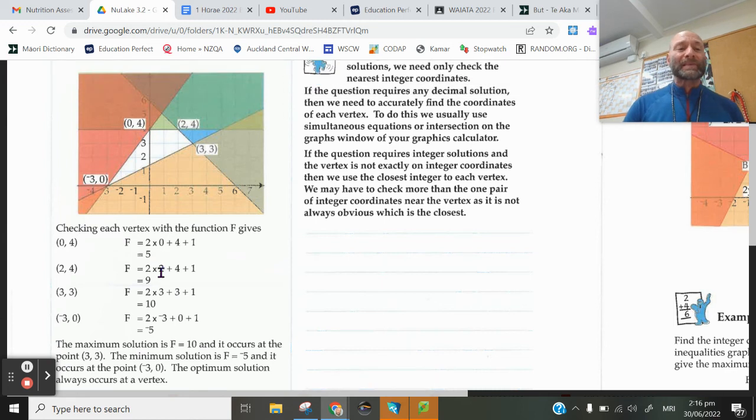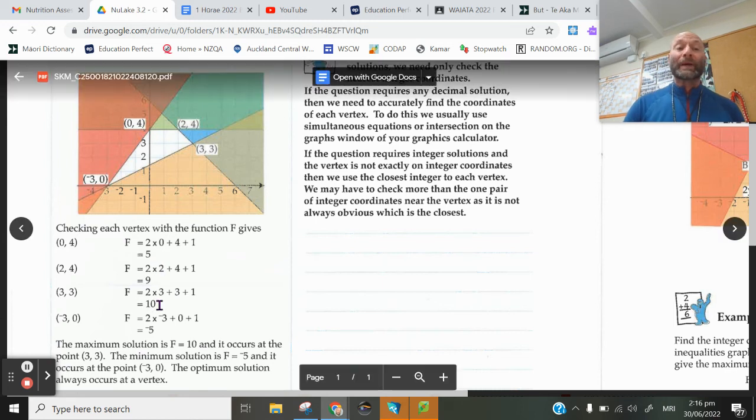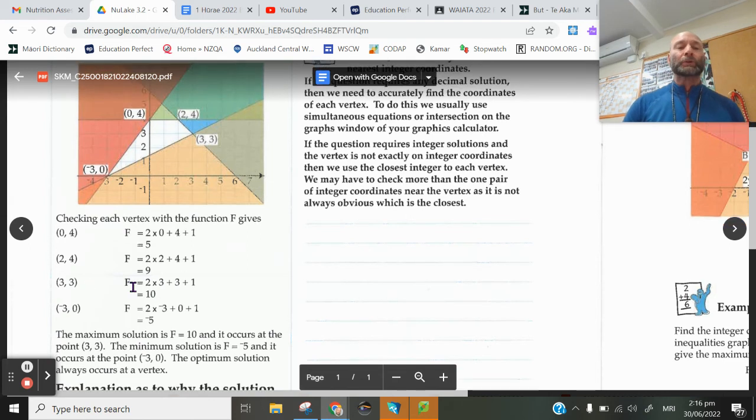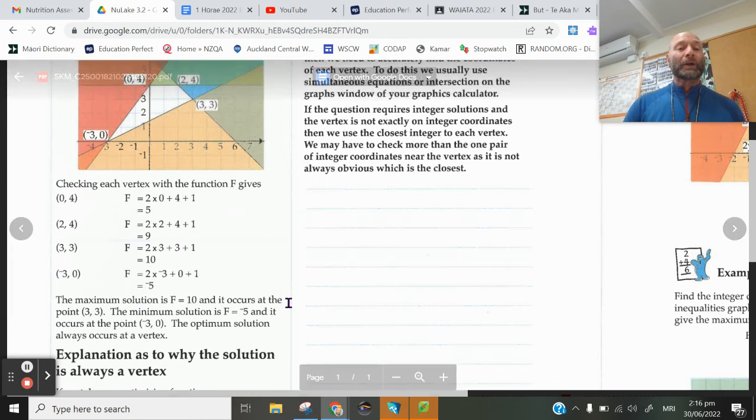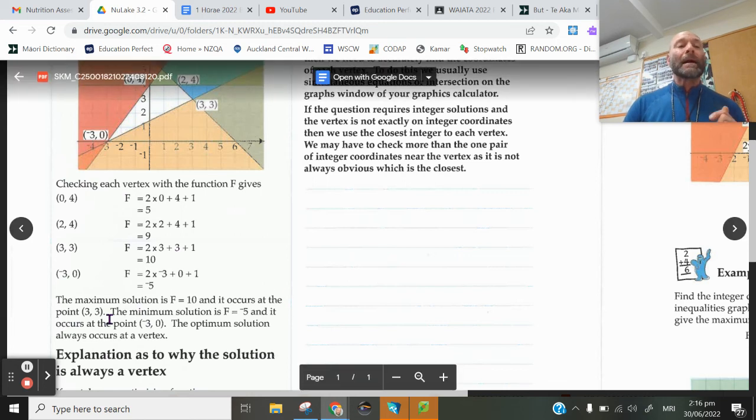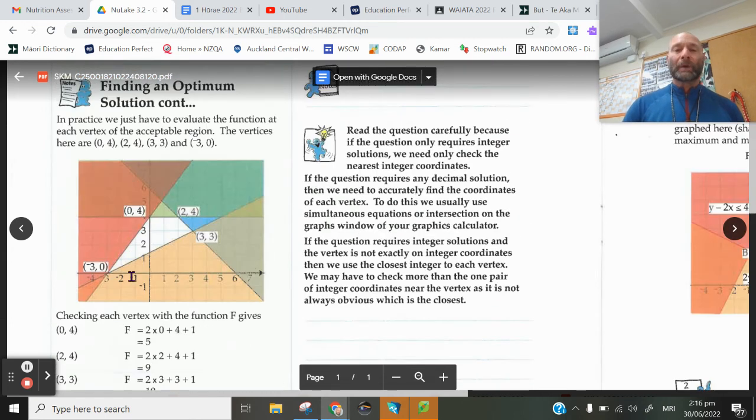Now in this case the biggest output here is 10 which means the point 3 comma 3 is the maximum solution. Here's what we say. The maximum solution is f equals 10 and it occurred at the point 3 comma 3. If there's a minimum solution you're looking for, negative 5 is the minimum solution and that occurred at the point negative 3 comma 0.